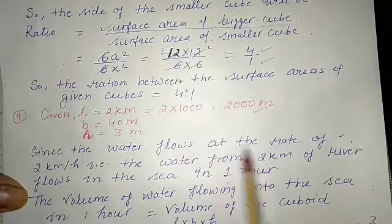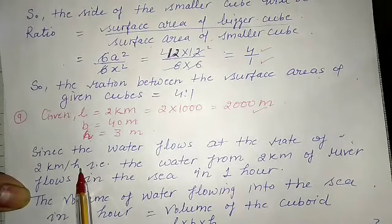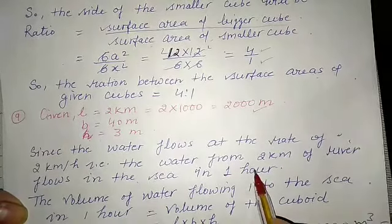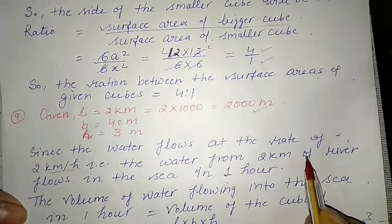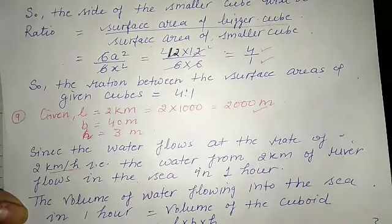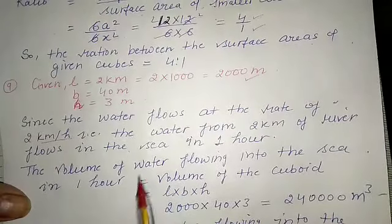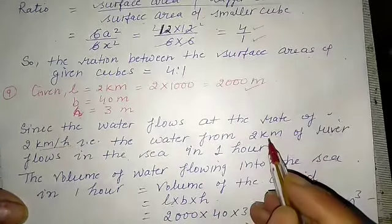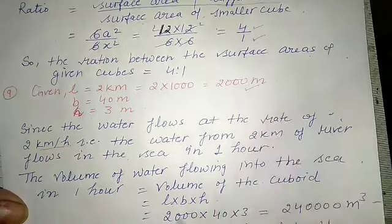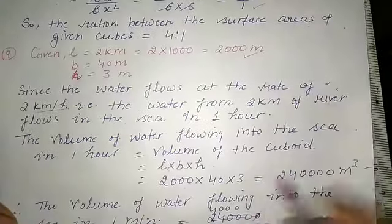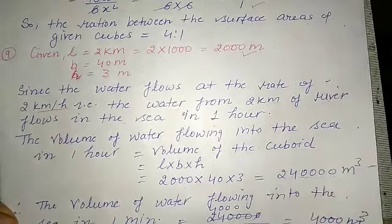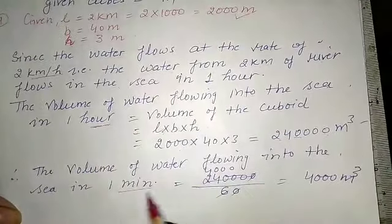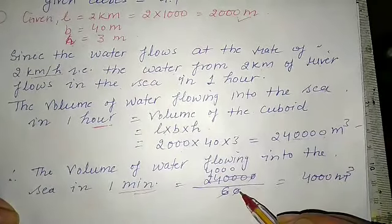The water from 2 km of river flows into the sea in one hour. Volume of water flowing in one hour = l × b × h = 2000 × 40 × 3 = 240,000 meter cube. Since we need the volume per minute, we divide by 60: 240,000 ÷ 60 = 4000 meter cube. So 4000 meter cube of water flows into the sea per minute.